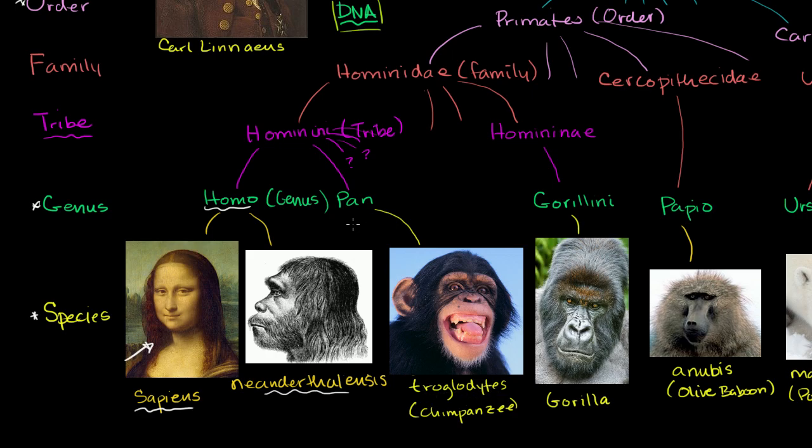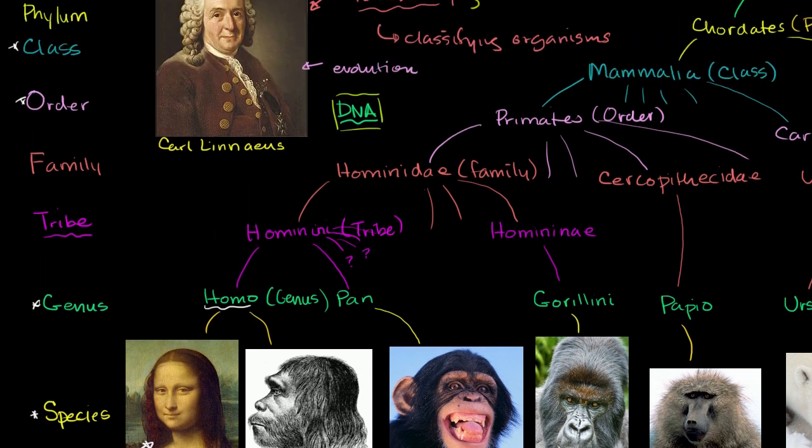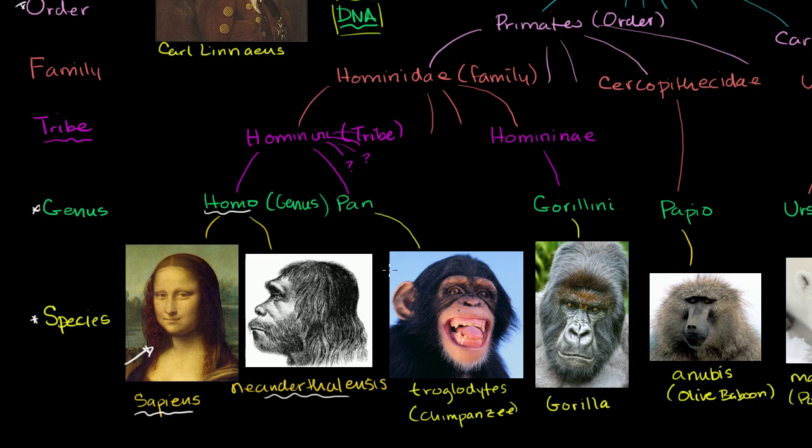That's also another convention that Carl Linnaeus came up with: you refer to a particular species by its genus and then its species. You capitalize the genus and you lowercase the species. So we're Homo sapiens. This is Homo neanderthalensis. This is Pan troglodytes, or often referred to as chimpanzees.